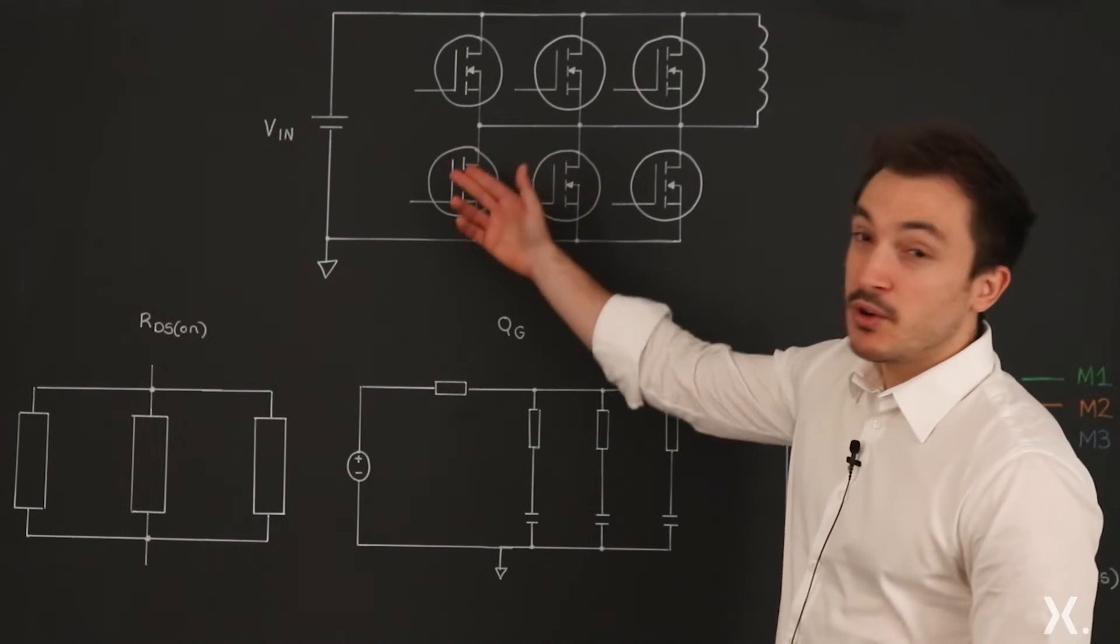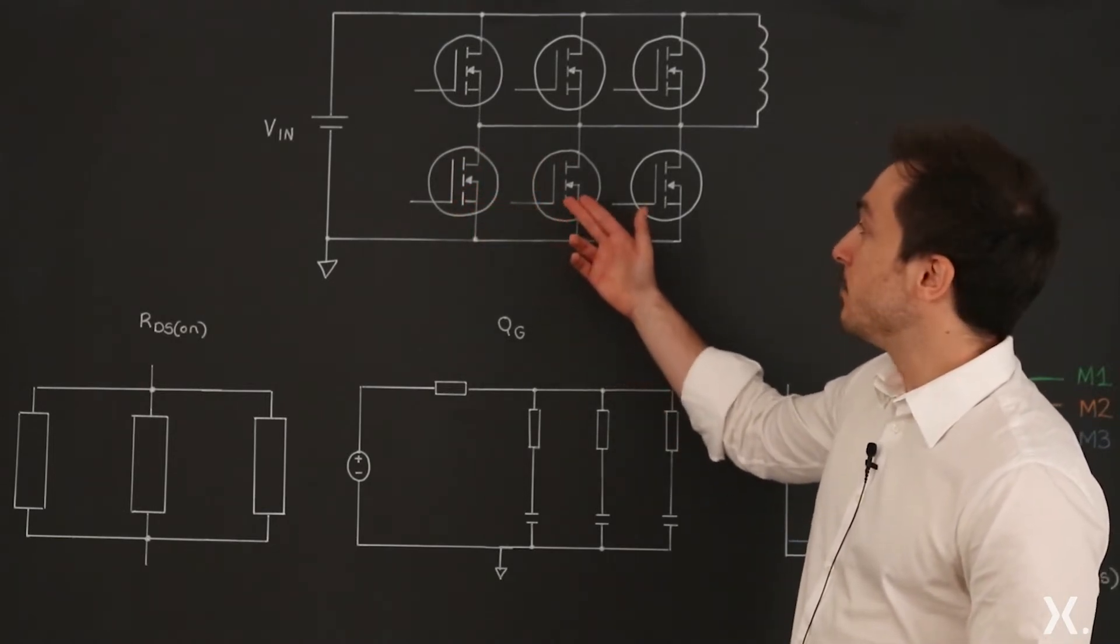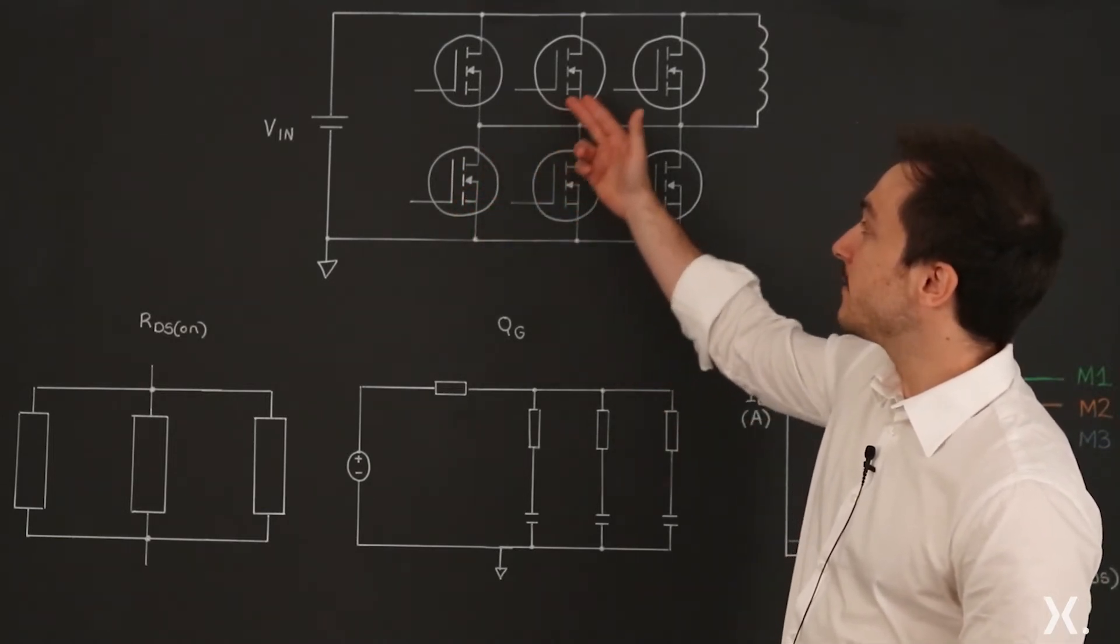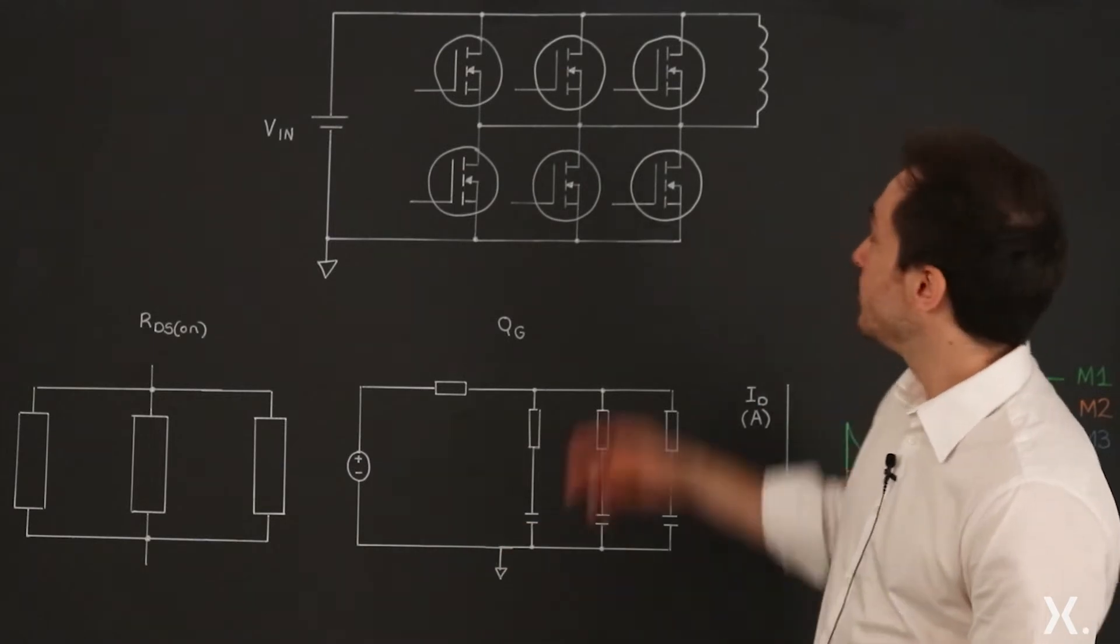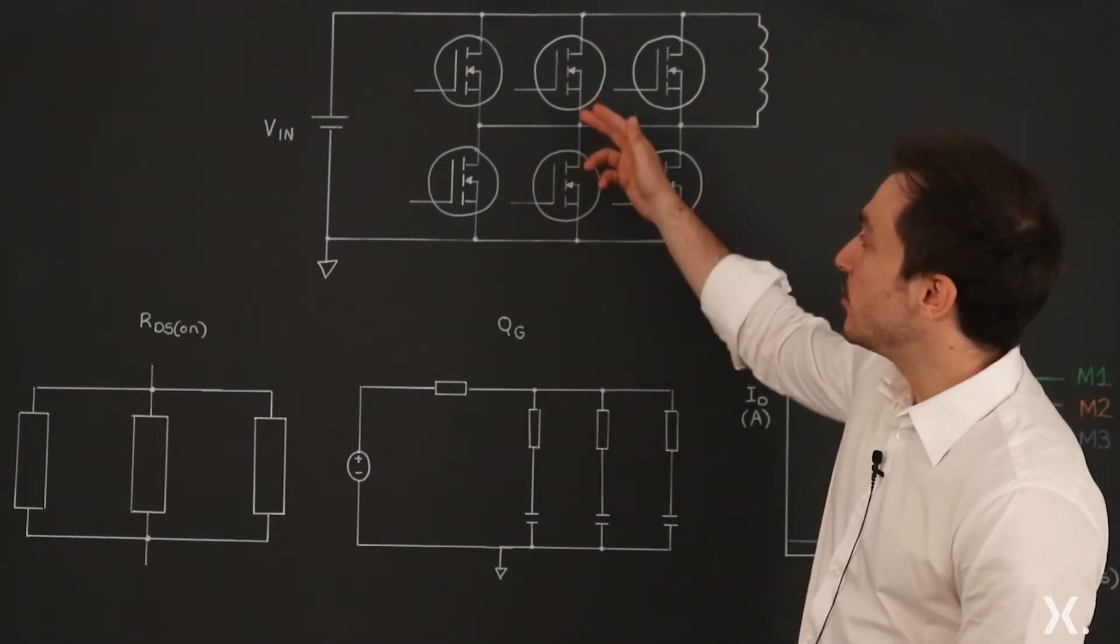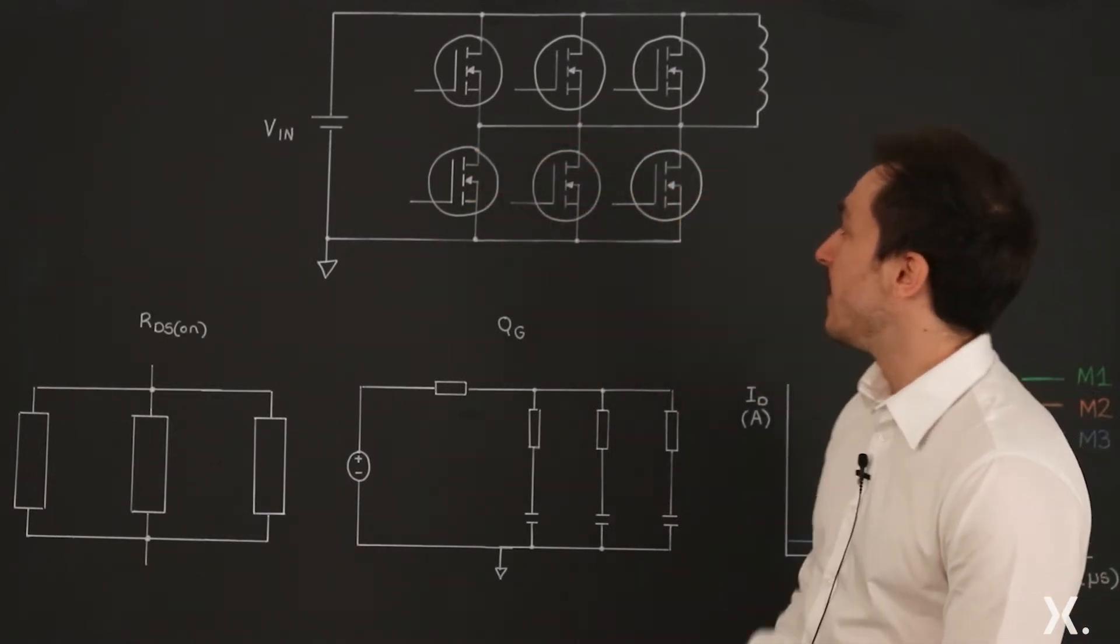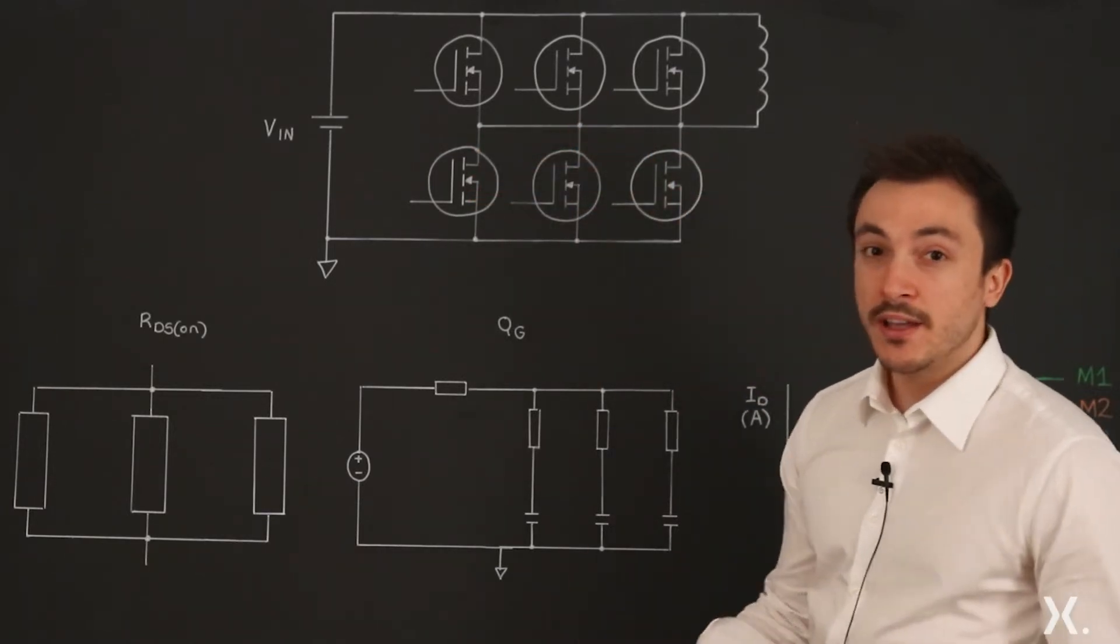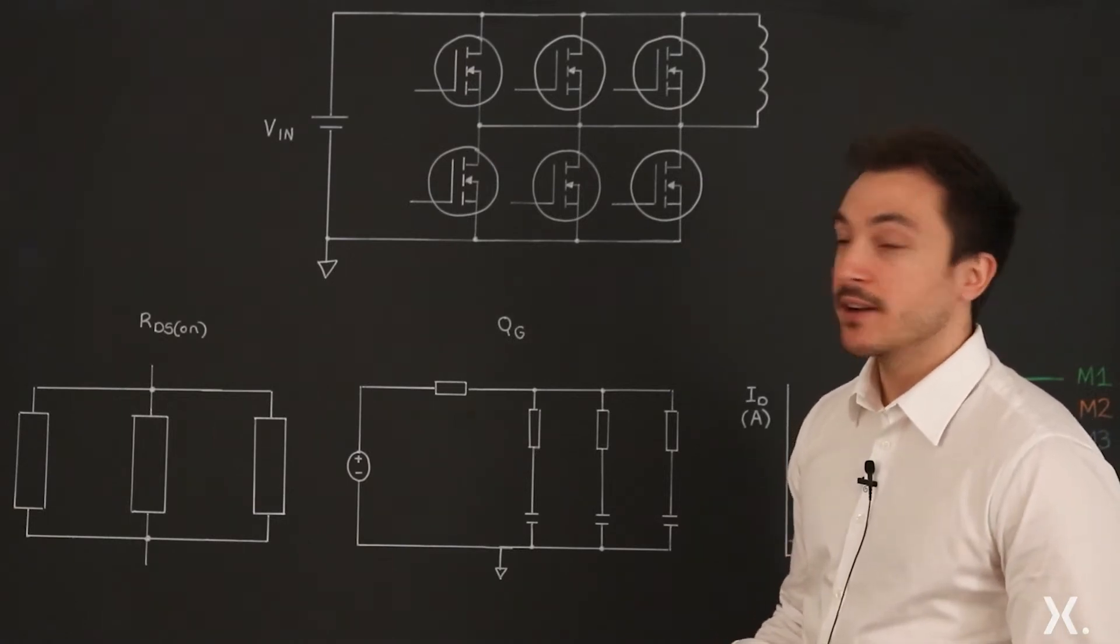As you can see, three MOSFETs are paralleled both at the low side and the high side of a half bridge, driving an inductive load. In this case, the current will share among the three devices; therefore, equal current sharing is the main target.